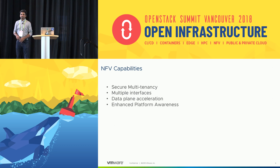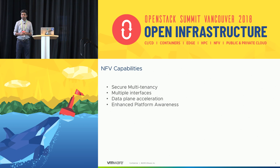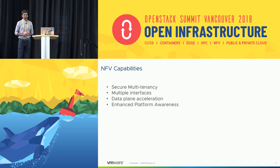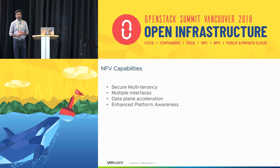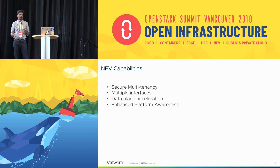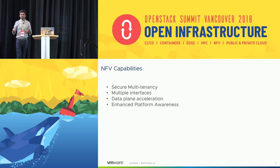The capabilities we're going to focus on here are: secure multi-tenancy, multiple interfaces at the Kubernetes pod level — a pod being a logical grouping of containers — data plane acceleration (how we expose rich hardware capabilities like SRIOV or DPDK into containers), and enhanced platform awareness. None of this is new with respect to OpenStack; these requirements apply to virtual machines too. The key ask is how to expose these things into containers, and also how to run VMs and container network functions, VNFs and CNFs, in parallel.